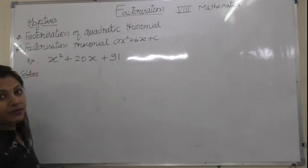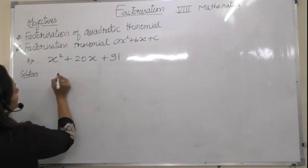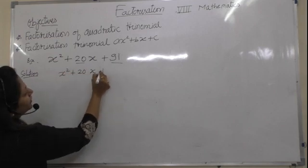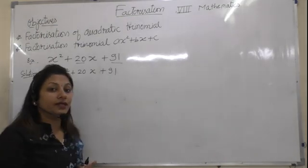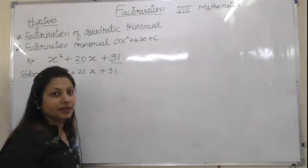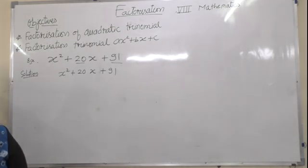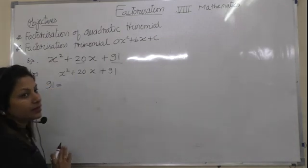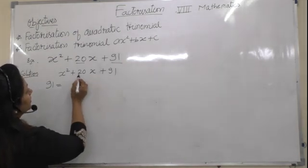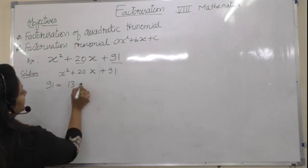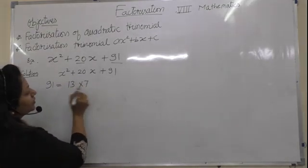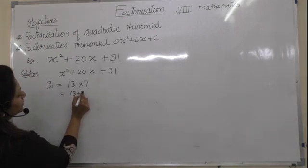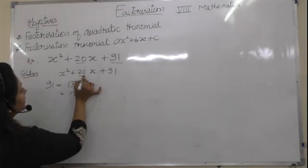Let us take example: x squared plus 20x plus 91. Here 20 is the middle term coefficient and 91 is the last term. We need two numbers whose addition is 20 and multiplication is 91. So we find factors of 91 — the only two prime factors are 13 and 7.